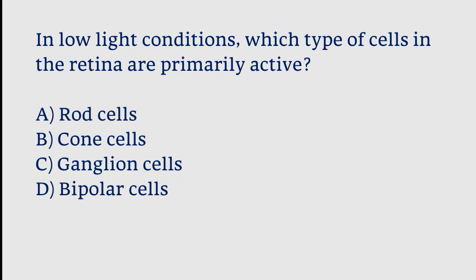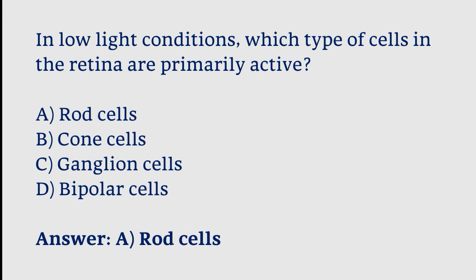In low light conditions, which type of cells in the retina are primarily active? Options: rod cells, cone cells, ganglion cells, bipolar cells. The correct answer is option A. Rod cells are primarily active in low light conditions.